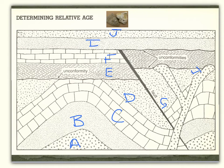Now we're going to determine the relative age of some of these rock layers. The one on the bottom, rock layer A, is our oldest layer. The one on the top, rock layer J, is our youngest layer.